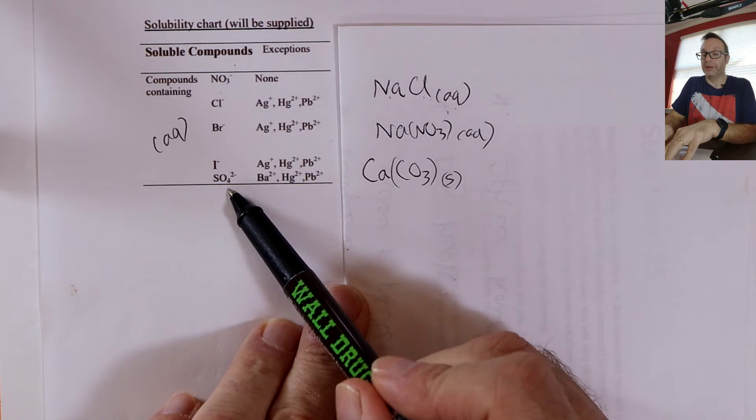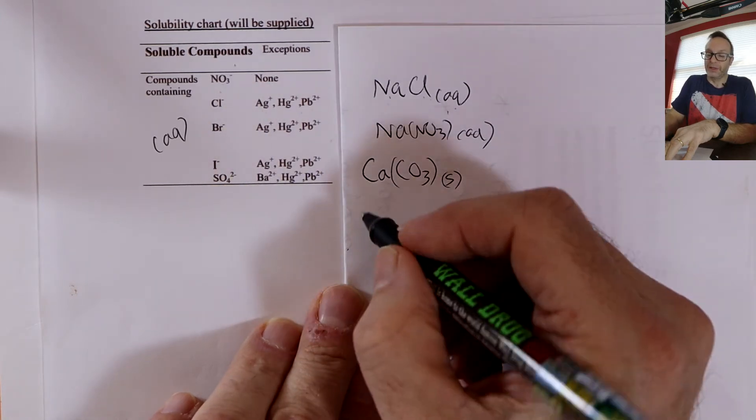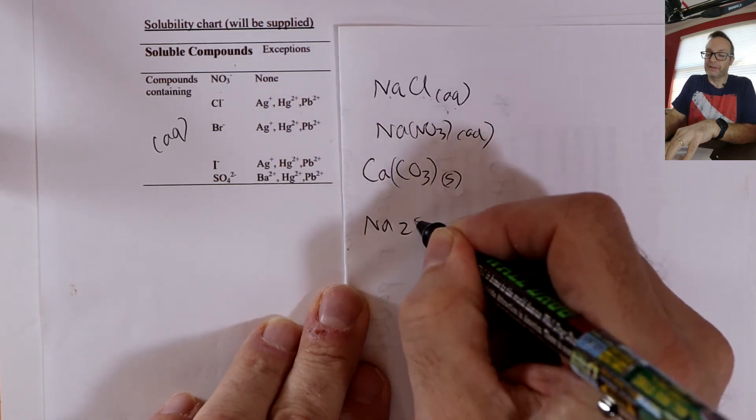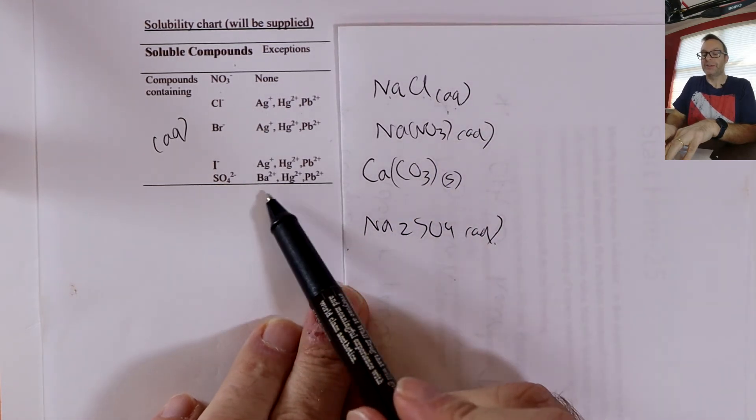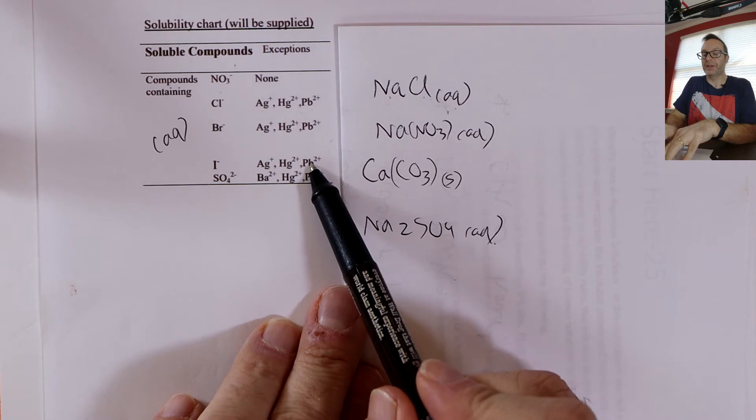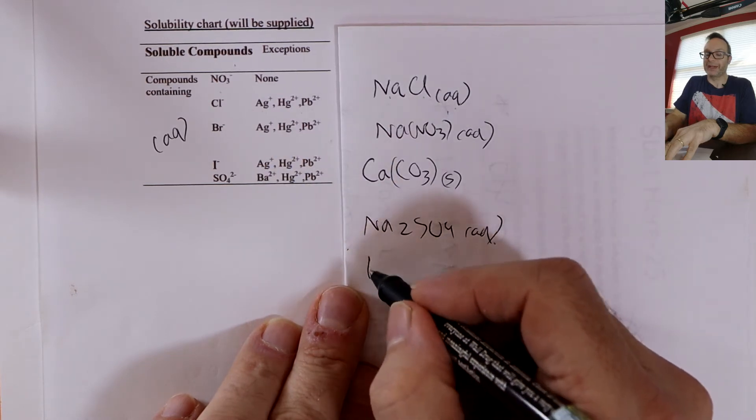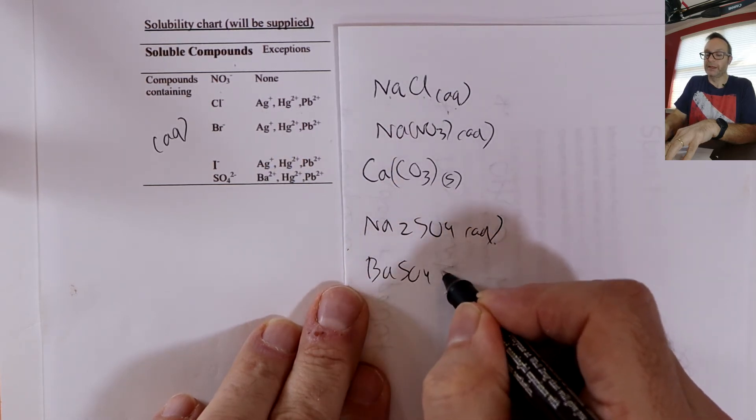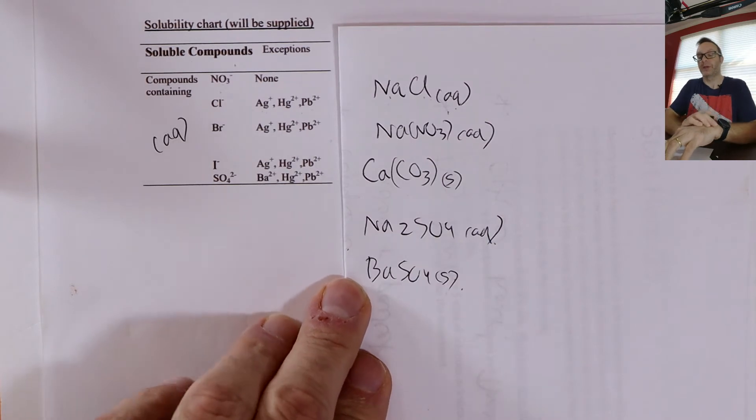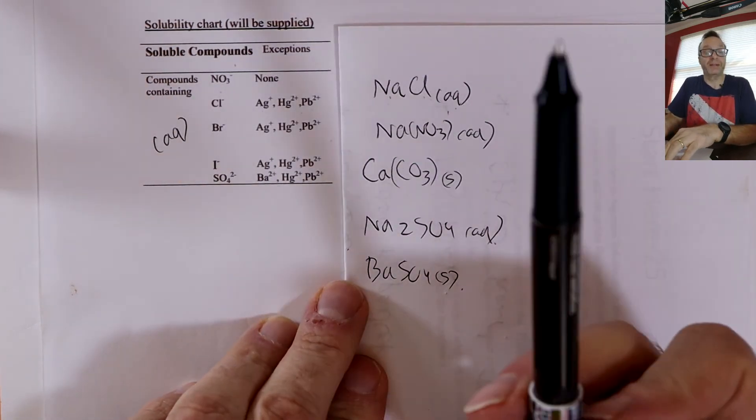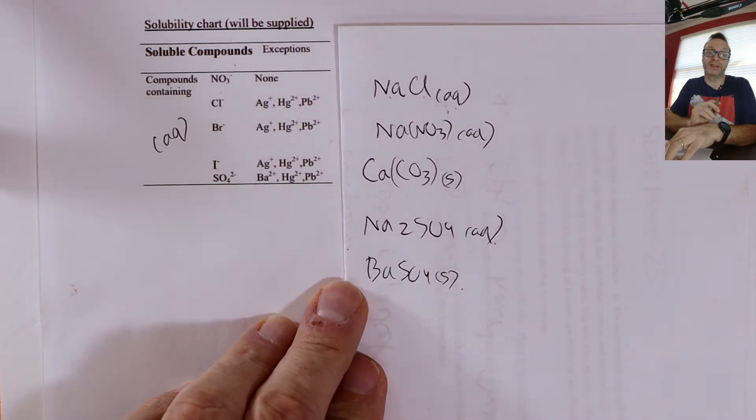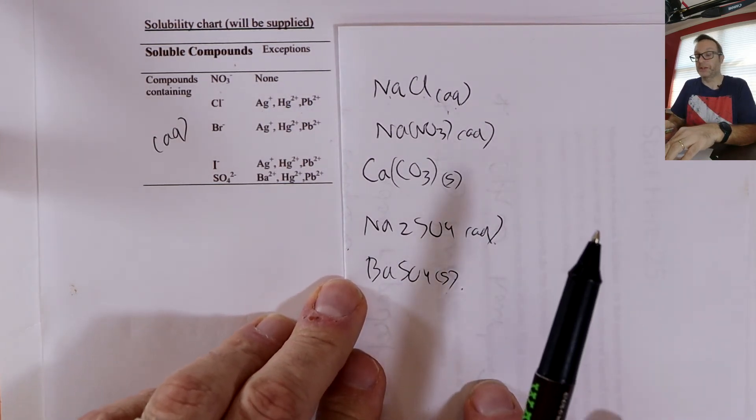And then sulfates, again, generally soluble. So sodium sulfate would be aqueous. But there are a few exceptions. Similar to the halides that barium swapped out, this is a classic. So barium sulfate would be a solid. So get familiar with the solubility chart, know how to use it, practice practice practice. And I go over that in some detail in that video lecture.